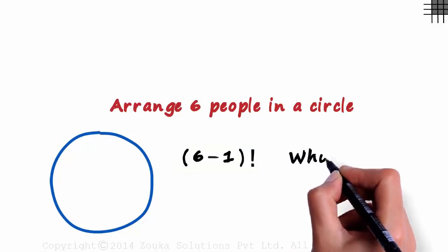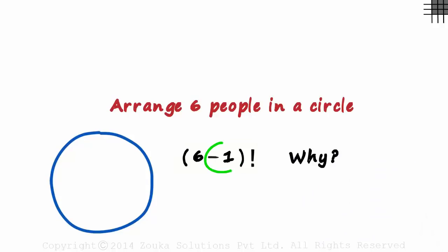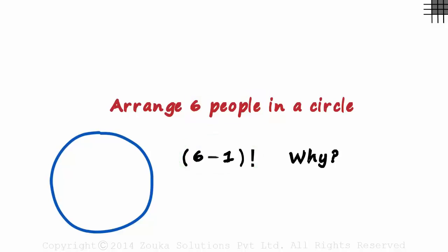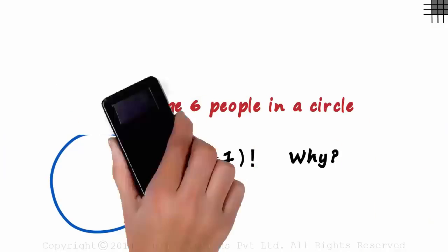But why? Why do we subtract a one? This is exactly what most don't know, and most of us won't even try to understand it. Because it's a simple formula: n people around a circular table can be arranged in n minus one factorial ways. Let's understand why.